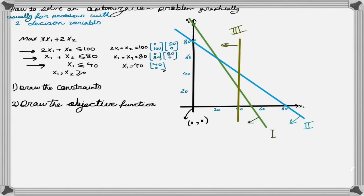Now we are done drawing our constraints. We can form the feasible region, which is in fact the intersection of all the areas found by the constraints. The intersection of all these feasible areas will be the area shown in yellow in this example. Now that we have found the feasible area, we are interested to find the x1 and x2 in this area that maximizes the value of the objective function, which is 3x1 plus 2x2.